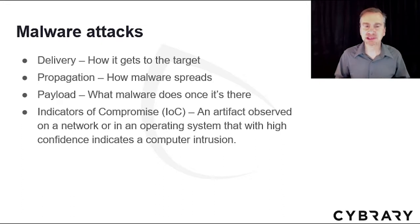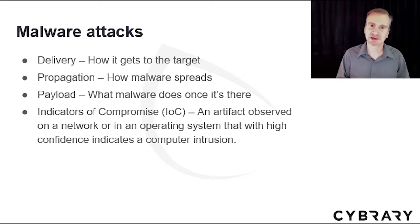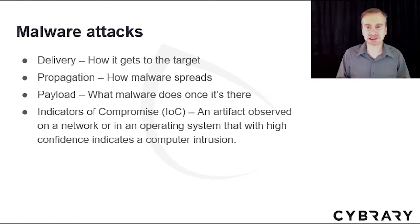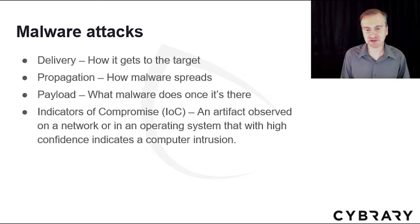For example, delivery: how does the malware get to the target? Is it through email or a malicious website? Propagation is how the malware spreads. What it does at the target is the payload — what does the malware do once it gets there? Indicators of compromise (IOC) are artifacts observed on a network or in an operating system that with high confidence indicate a computer intrusion. Typical IOCs include virus signatures, IP addresses from known malicious sources, MD5 hashes of malware files or URLs, or domain names of botnet command and control servers.